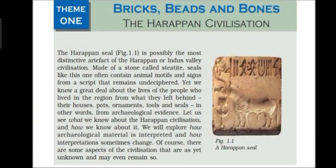Now let us come to our main topic — Theme One: Bricks, Beads and Bones — with reference to Harappan civilization. There were distinctive artefacts found as evidence, the most important being the seal. The Harappan seal was made of steatite stone, had an animal motif on it, and carried signs from a script that remains undeciphered. However, it was written from right to left, similar to the Kharoshti script. Houses, pots, ornaments, tools and seals are all part of the archaeological survey evidence.